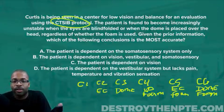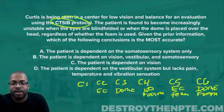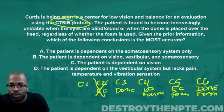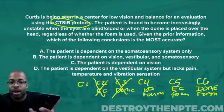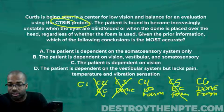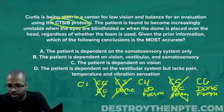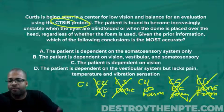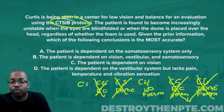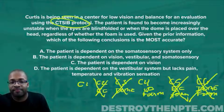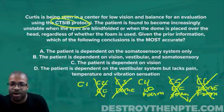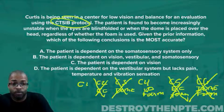So what is the sentence telling us? The patient has a problem when the eyes are closed (C2), when the dome is on (C3), when eyes are closed on foam (C5), and when the dome is on with foam (C6). It doesn't matter whether the foam is used or not. The patient is unstable in conditions 2, 3, 5, and 6.